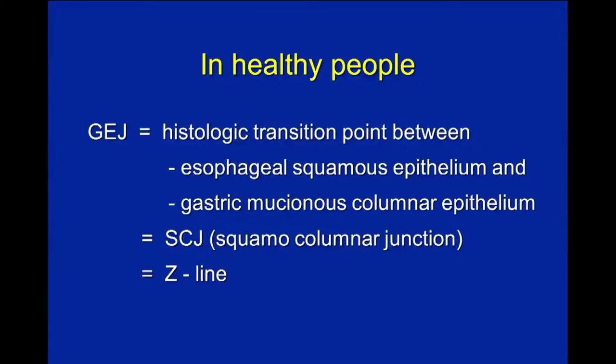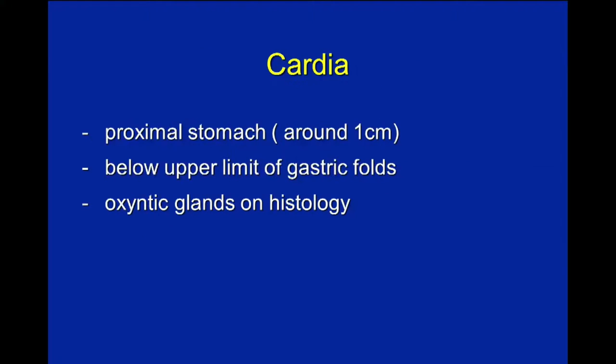In healthy people, the gastroesophageal junction is at the same level as the squamous columnar junction — it is called the Z-line. This is where the two organs meet and also where two epitheliums meet: squamous esophageal epithelium and gastric mucinous columnar epithelium. In normal people, this should be easy to see during endoscopy.